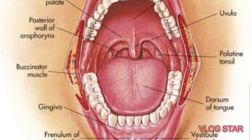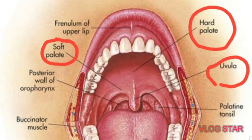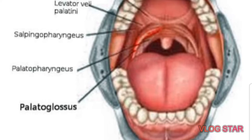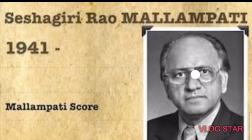In this picture you can visualize the uvula, hard palate, and soft palate. The faucial pillars will be described in the next picture. You can appreciate the palatoglossal muscle — the right and left palatoglossal muscles create a ridge or elevation on the lateral pharyngeal wall, which is referred to as the faucial pillars in anesthesia.